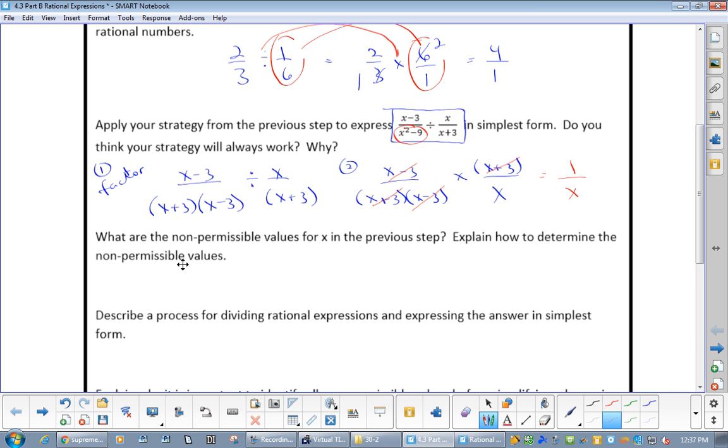Now, sometimes a mistake students make is they flip the first one. You can never flip the first one. It's always the second one. So, all I did was change it to a multiplication sign and I flipped it. Now, get cancelling stuff. This cancels with this. This cancels with this. Which, I guess I could have cancelled before. So, what am I left with up top? A 1 over x.